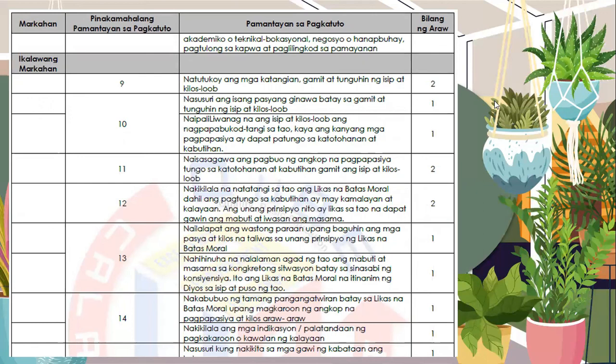When the second quarter arrives, the numbering continues — 9, 10, 11, 12, 13, 14 — meaning the counting is continuous. The number of days allocated per topic also varies. For example, you can see: 2 days, then 1 day, 1 day, 2 days, 2 days, 1 day, 1 day, 1 day. But we must remember that we need to teach all competencies as much as possible, since the Department of Education has already narrowed down the competencies that learners must internalize.